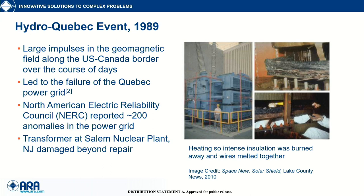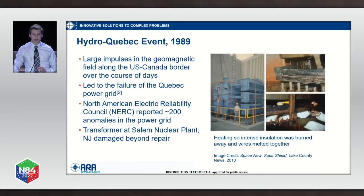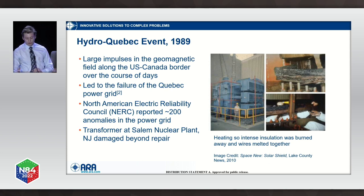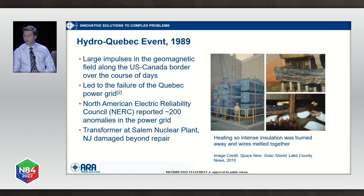Back in 1989, we had what's called the Hydro-Quebec event, sometimes called the Great Geomagnetic Storm. For about two to three days, there was a burst of impulses from the sun focused along the US-Canada border. This resulted in large currents being driven on transmission lines and actually tripped a lot of circuit breakers in the Quebec area power grid. The entire city was without power for hours. Down in New Jersey, there's a nuclear plant in Salem that experienced a particularly devastating effect — one of the transformers had so much current driven into it that the insulation on wires evaporated and wires melted together.